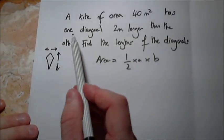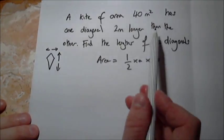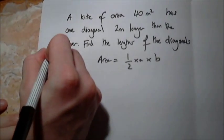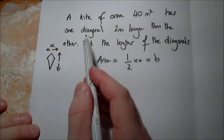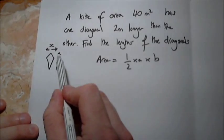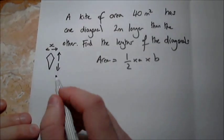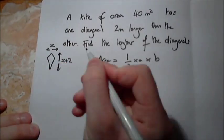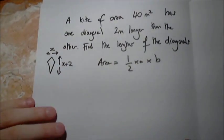It says one diagonal is two meters longer than the other. So if I call this diagonal x, and let's make this the smaller one, then this diagonal here must be two meters longer. So that makes x plus two.